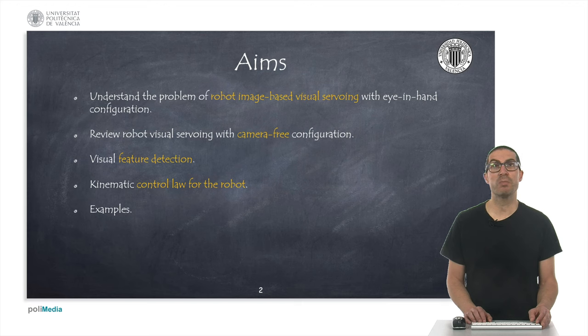For this purpose, we will review visual servoing with a camera-free configuration from our previous presentation. I will mention methods to detect features on images and how to implement the kinematic control law for the robot manipulator using those features. At the end, we will see some examples.